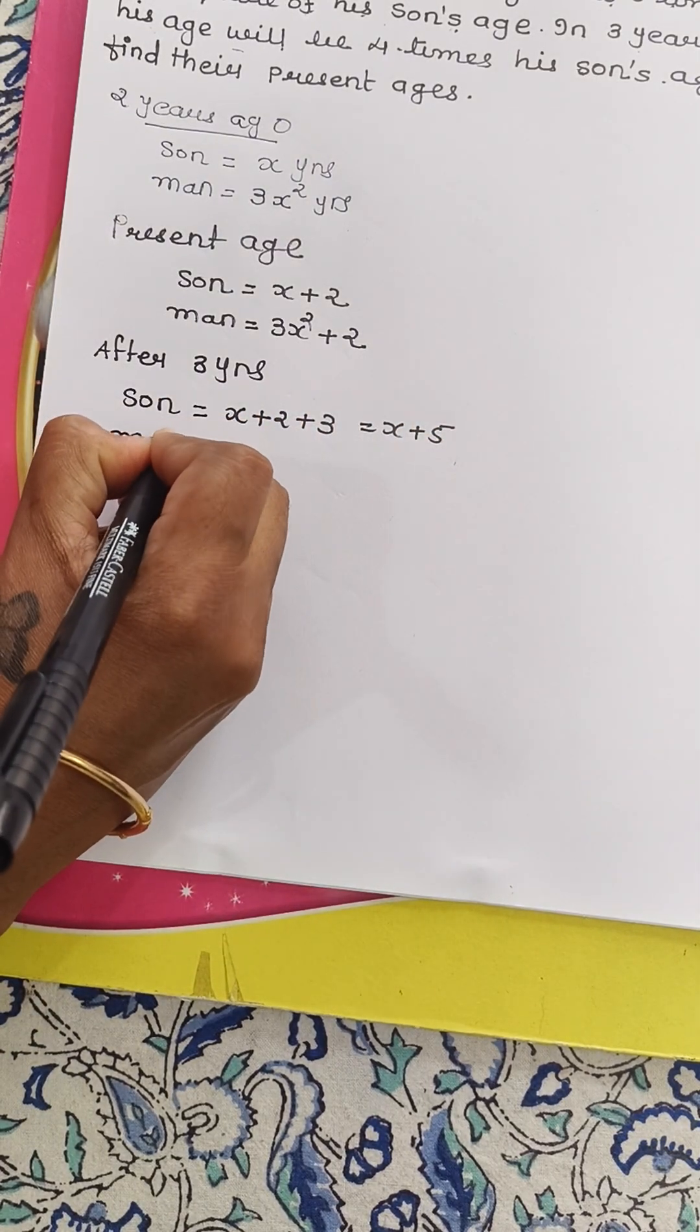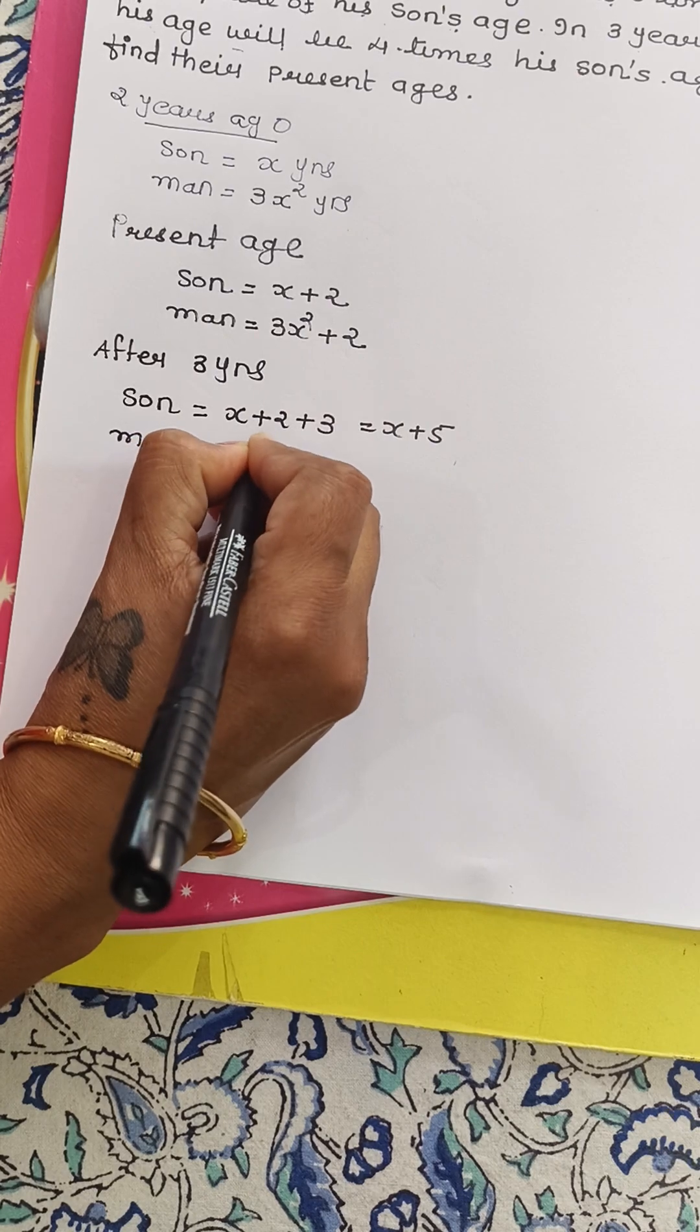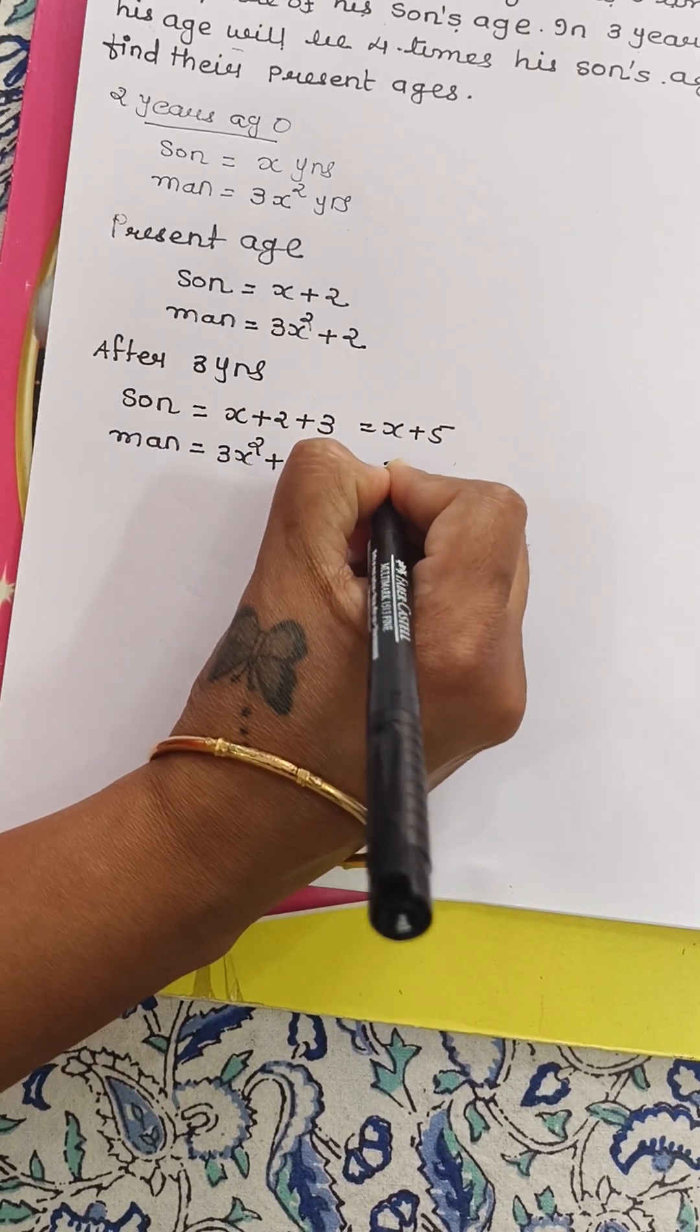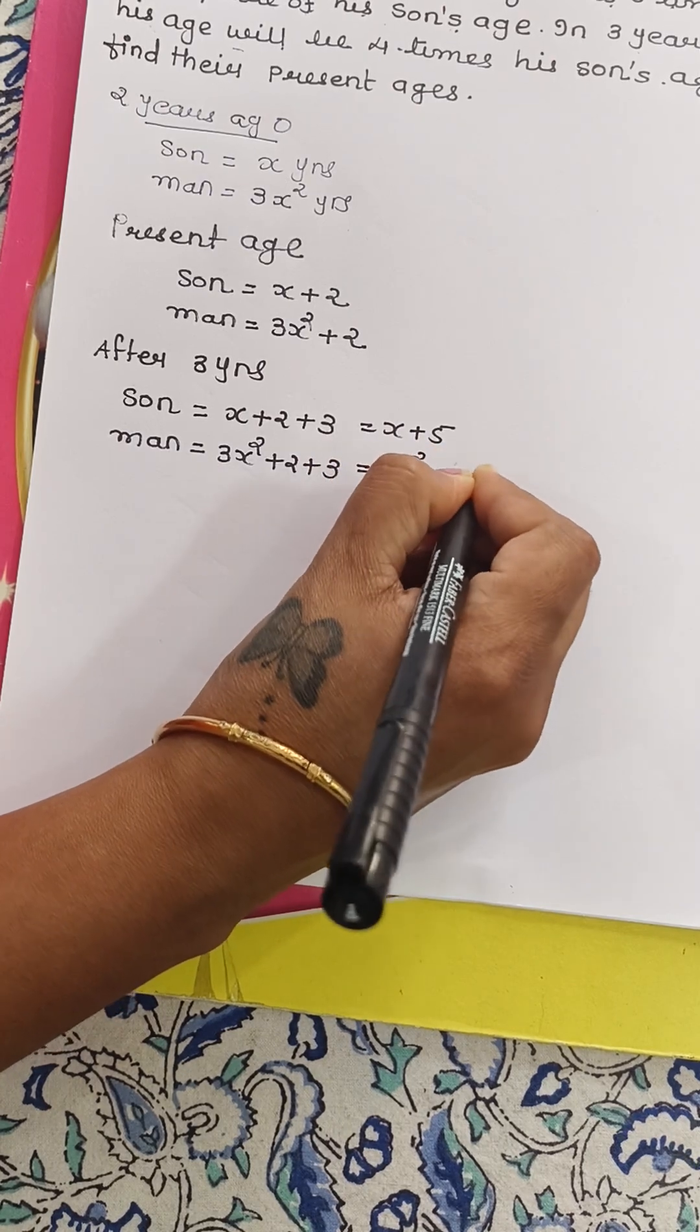Man's age will be 3X square plus 2 plus 3, that is 3X square plus 5 years.